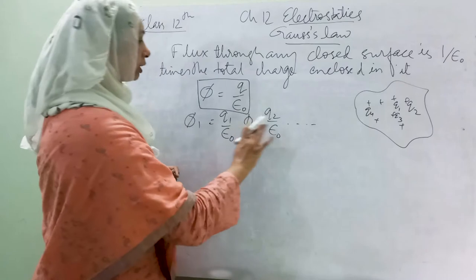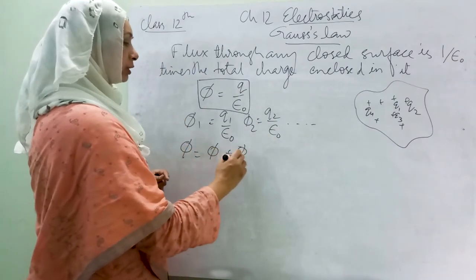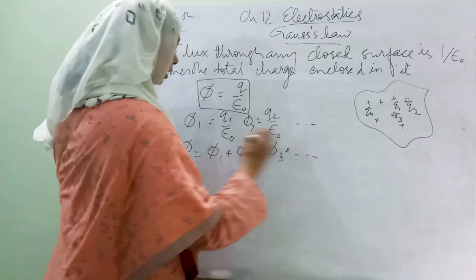In this way we will have many small fluxes. The total flux will be the sum of all the fluxes due to all these small point charges.